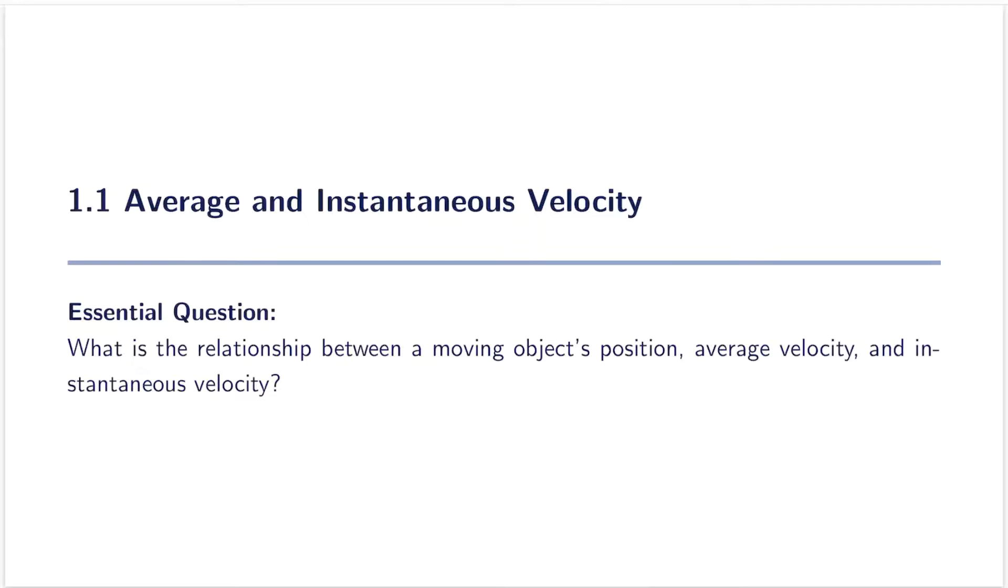I'm going to pretend to be a student in a math class taking notes on a new lesson. The lesson we're using as an example here is about average and instantaneous velocity. I can see on the title slide the lesson is on average and instantaneous velocity and there is also an essential question: What is the relationship between a moving object's position, average velocity, and instantaneous velocity?